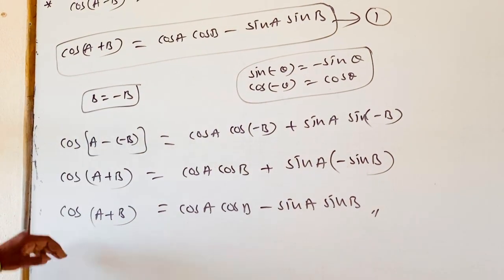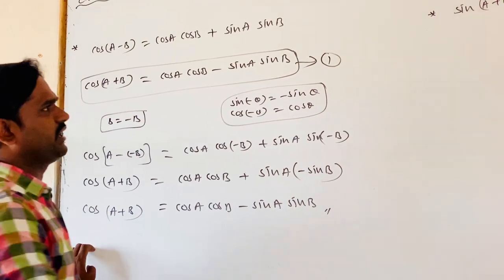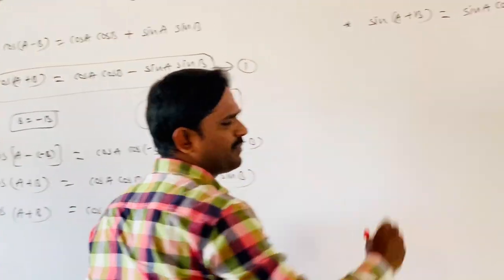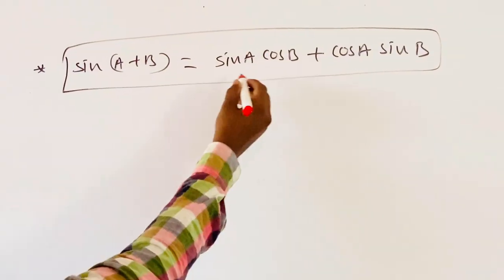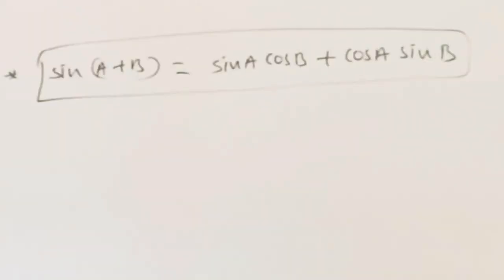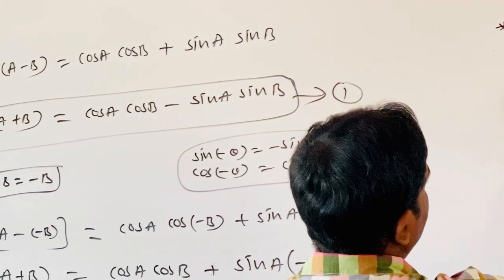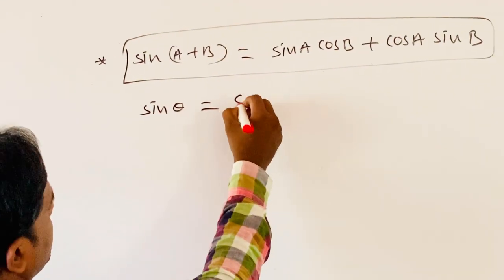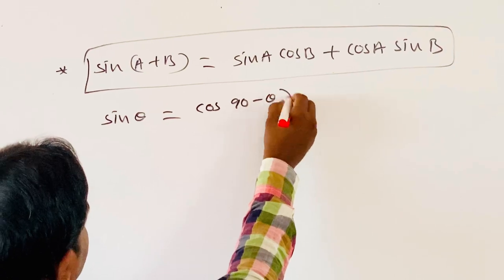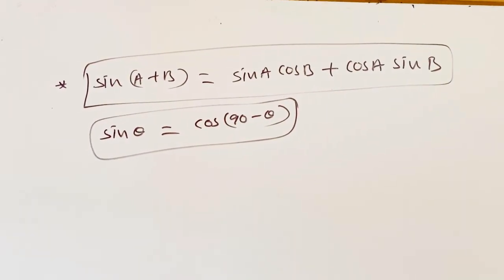By using these two identities, we will find the sin ratios: sin of A plus B. The formula for sin of A plus B is sin A cos B plus cos A sin B, which comes from equation 1. Note that sin theta can be written as cos of 90 minus theta, which we already learned in trigonometric ratios, the first topic.